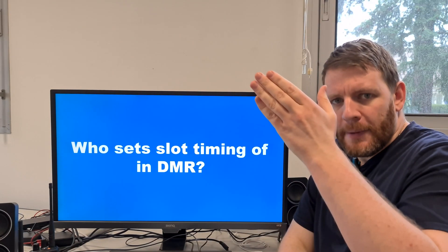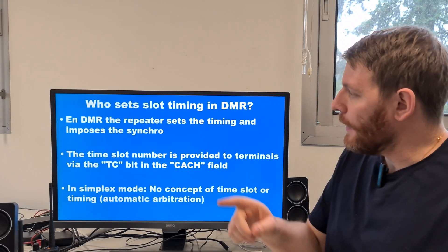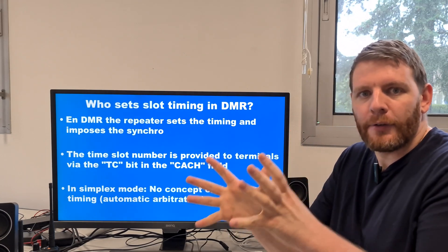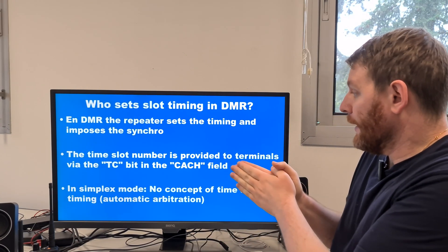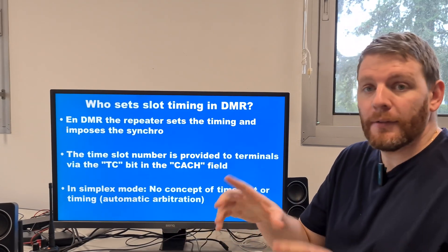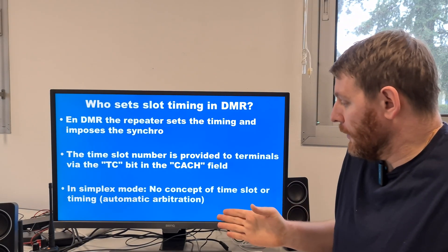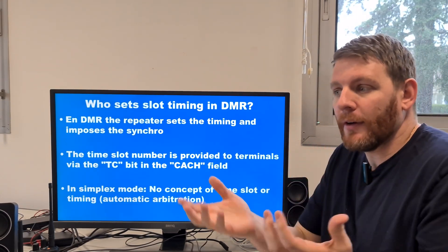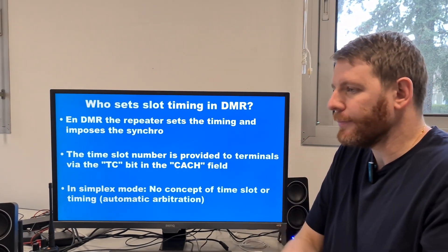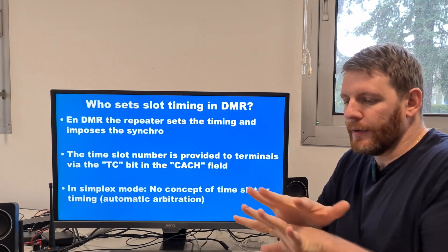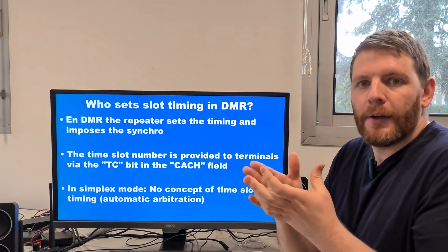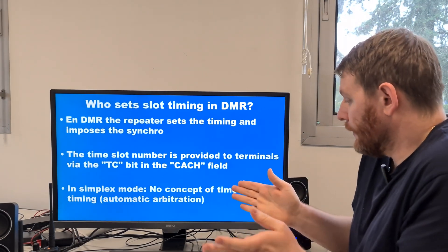Who sets slot timing and synchronization in DMR? This is the repeater. In DMR, synchronization sets the timing between slots and imposes the synchronization. The time slot number is provided to the terminals via the TC traffic control bit in the CACH command enhancement channel field. And in simplex mode, there is no concept of time slot, no concept of timing. There is an automatic arbitration to prevent against scrambling and signal interference.